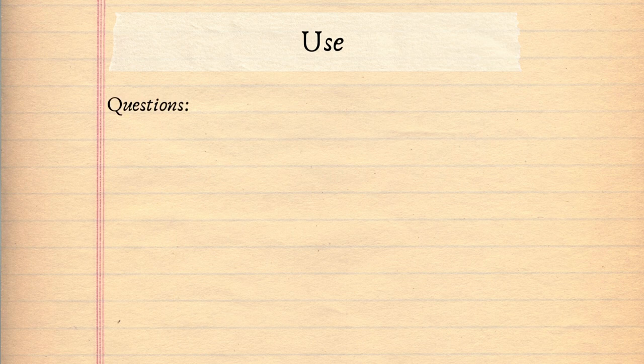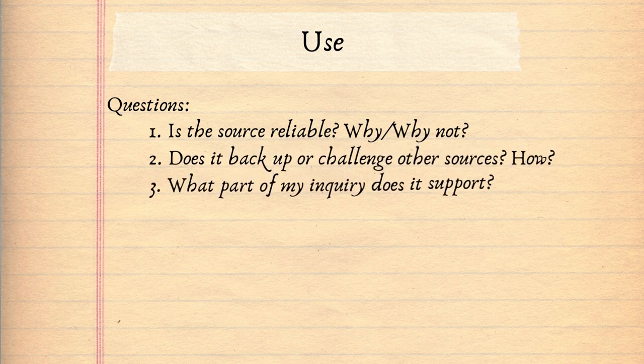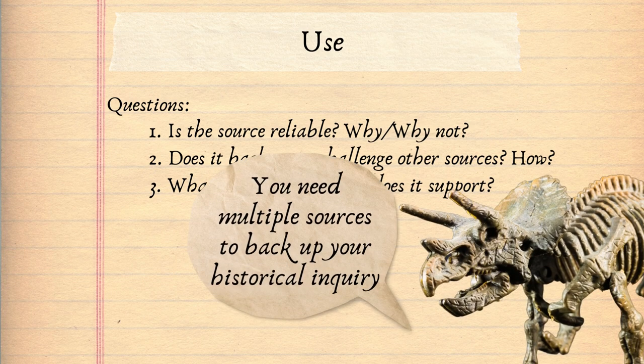Finally, we look at how we can use the sources that we've found. For each source, you should ask yourself the following questions: Is the source reliable? Why or why not? Does it back up or challenge other sources? How? And what part of my inquiry does it support? Don't forget that you need multiple sources to back up your historical inquiry. We recommend using at least three sources per sub-argument.